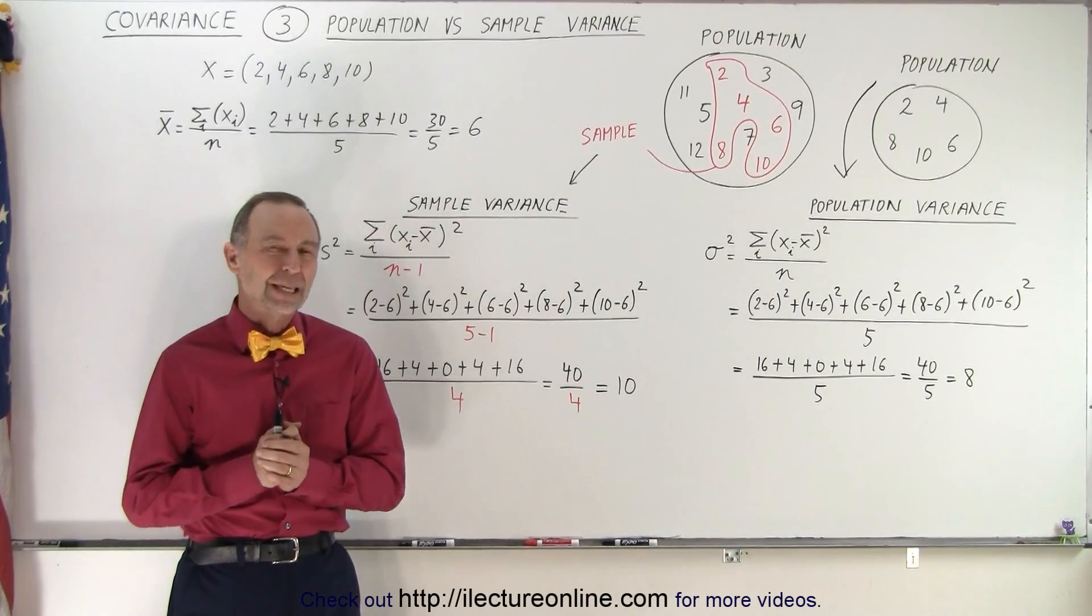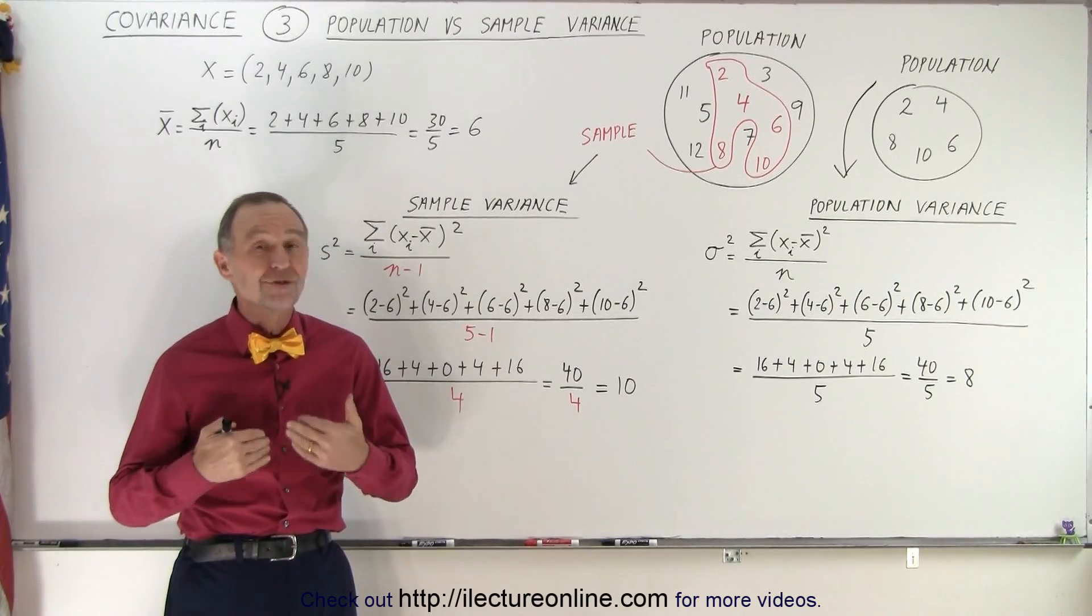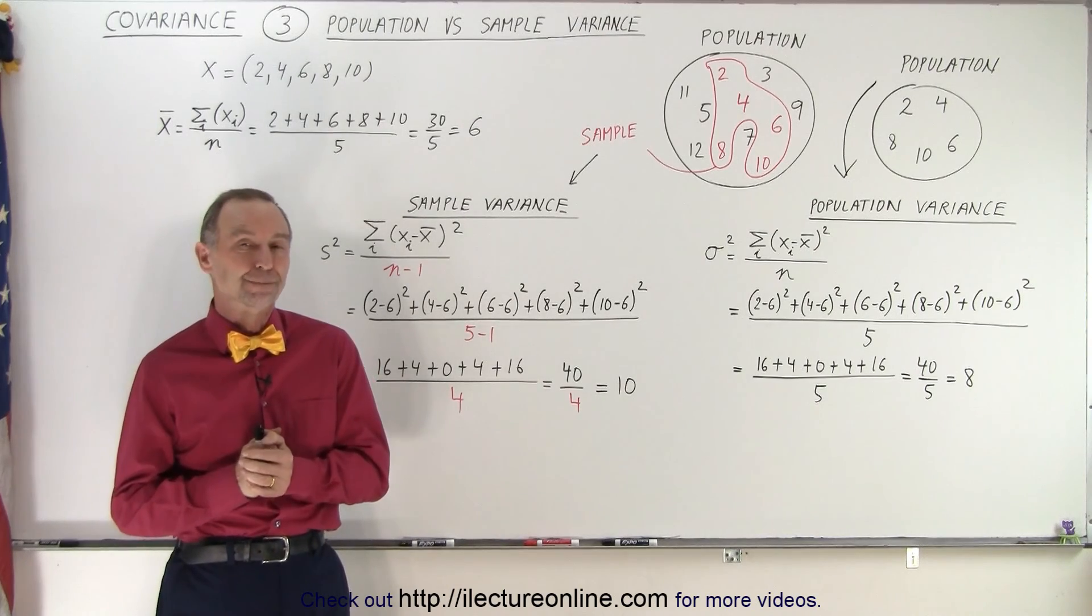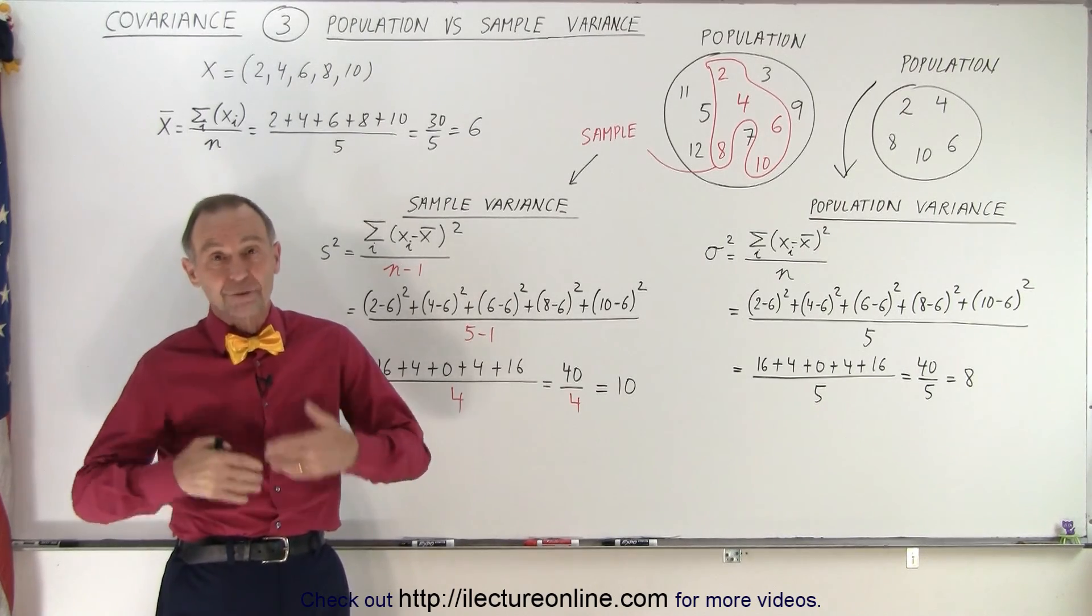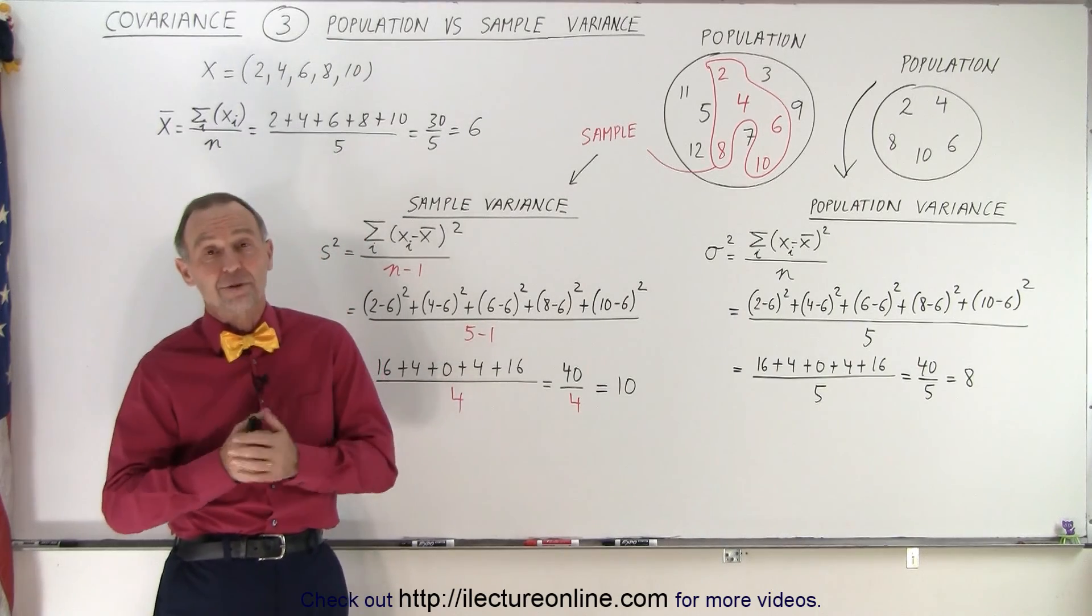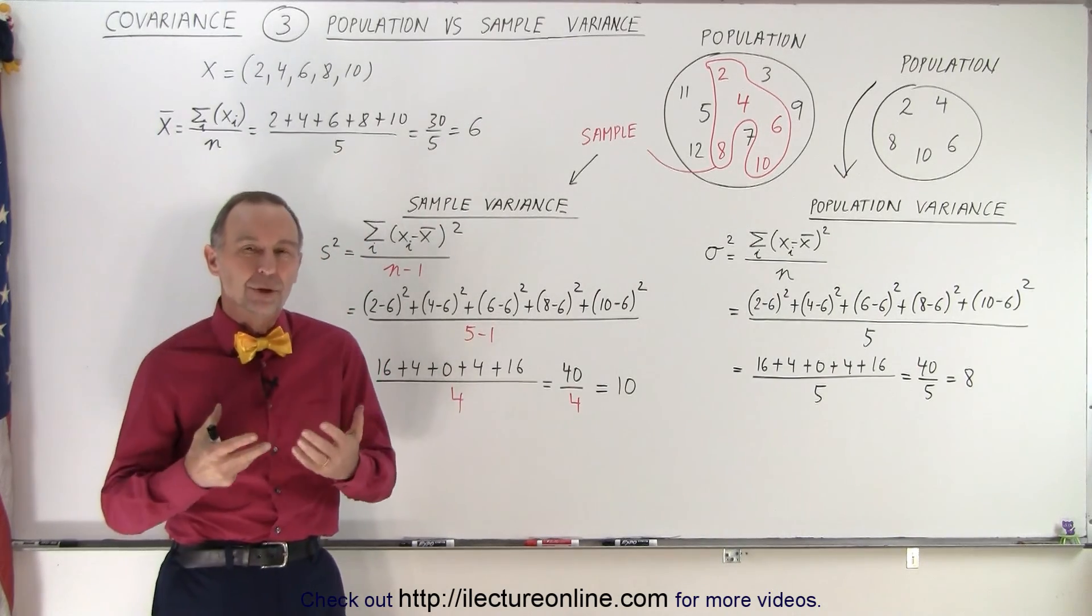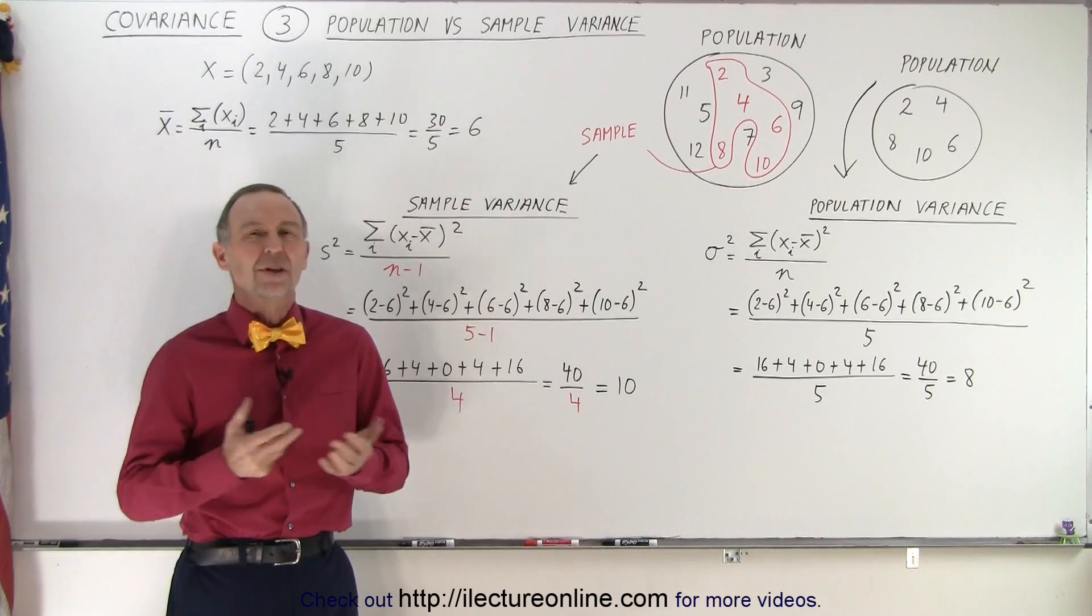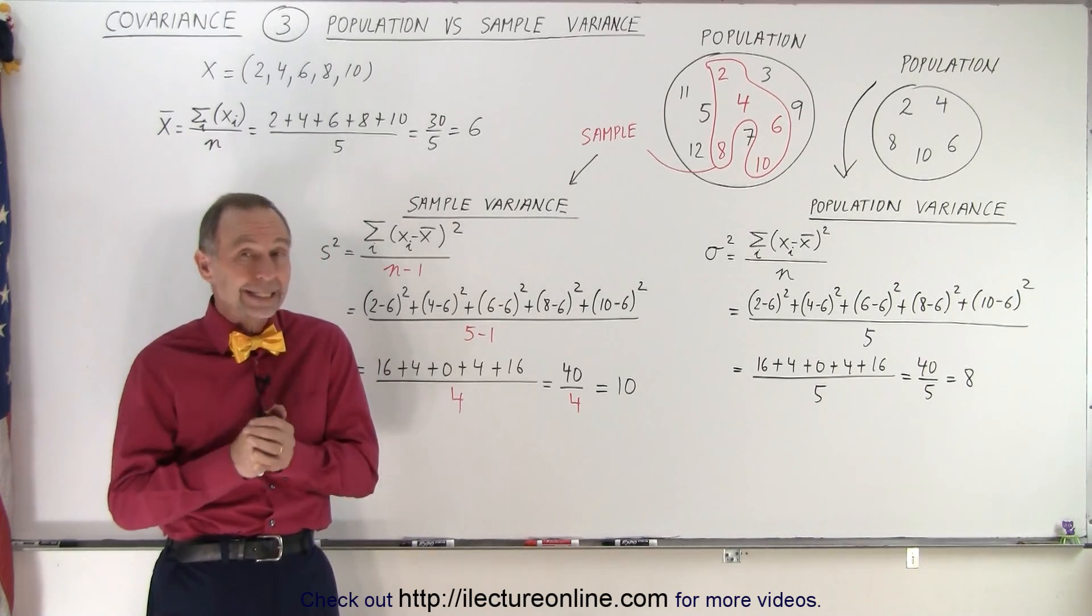Welcome to ElectronLine. Here we're going to touch upon something that is not very well understood. Sometimes we calculate the variance of a population, and sometimes we calculate the variance of a sample of a population. So what's the difference, and do we work it differently?